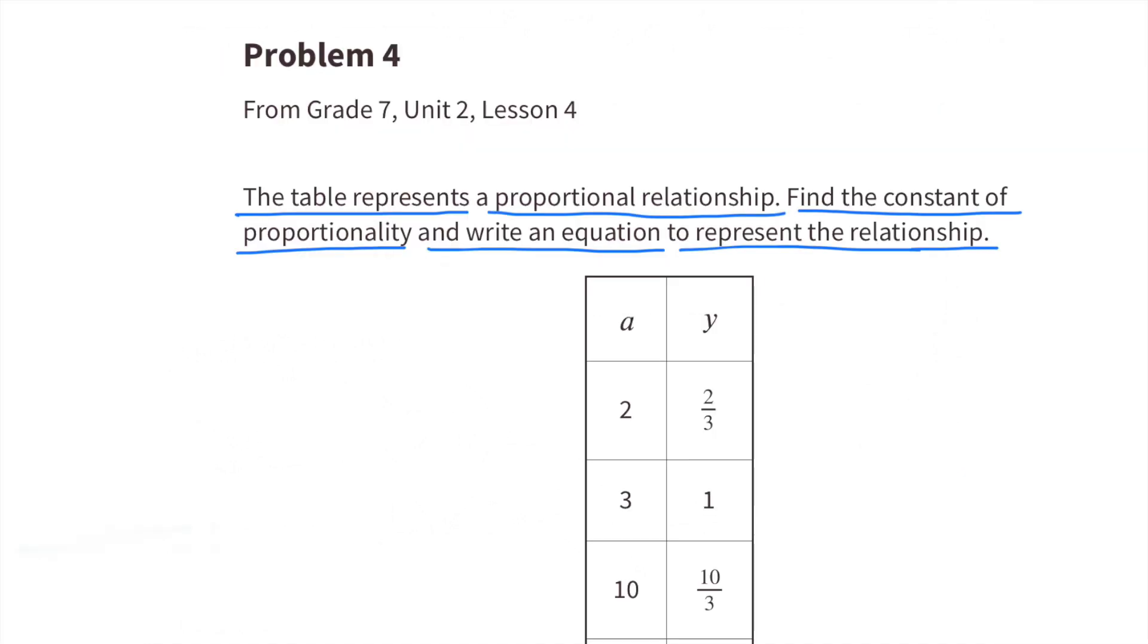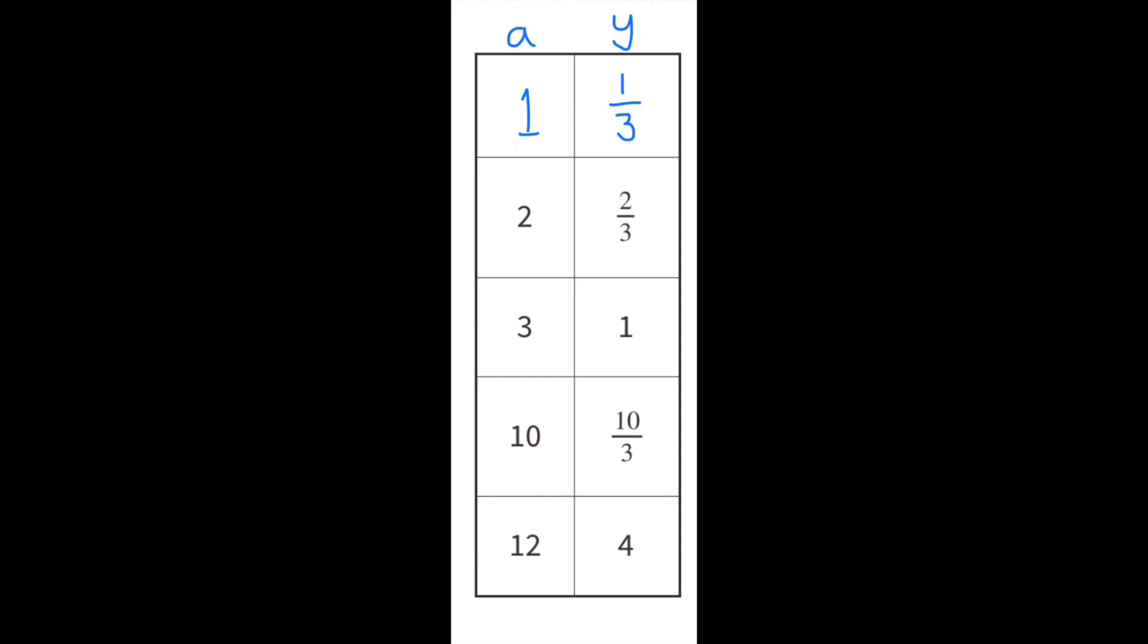Number 4. The table represents a proportional relationship. Find the constant of proportionality and write an equation to represent the relationship. a. When a equals 2 and y equals 2 thirds, then when a equals 1, y would equal 1 third. Because 2 divided by 2 is 1, and 2 thirds divided by 2 is 1 third.